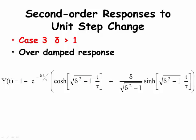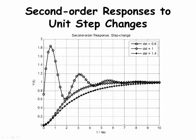The third case, when delta is greater than 1, is called the overdamped response. The equation for the overdamped response subjected to a unit step change is shown here. The overdamped response will not have any overshoot or oscillations, but it takes more time — it is slower reaching the final value compared to the critically damped response. Overdamped responses are commonly called sluggish. Other coefficients will affect the magnitude of overshoot in an underdamped response or the sluggishness of an overdamped response.